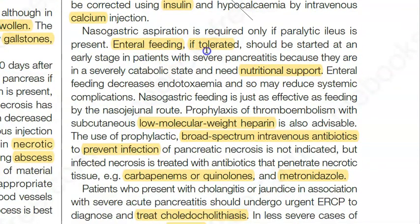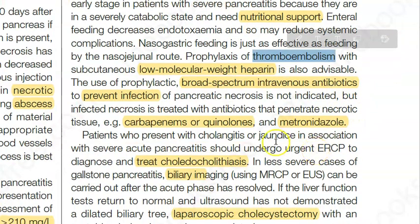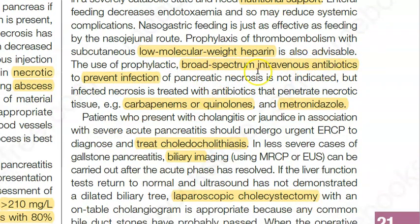If the patient can tolerate enteral feeding, this should be given — nutritional support is very important. For thromboembolism prevention, give low molecular weight heparin. Give antibiotics to prevent infection; suitable agents include carbapenems, quinolones, and metronidazole. Carbapenems are beta-lactam antibiotics — examples include imipenem and meropenem.